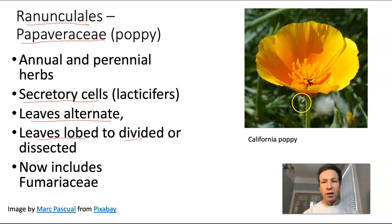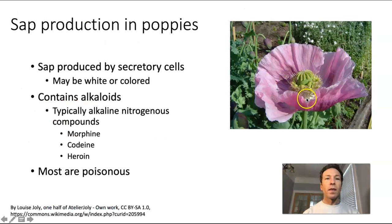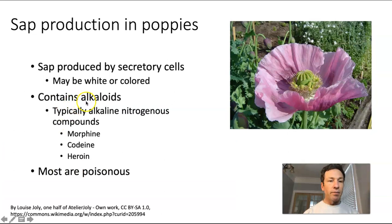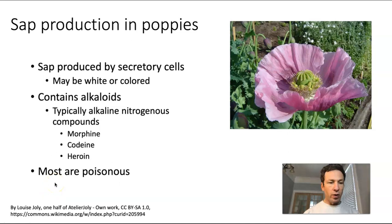Here's an example of a poppy — the California poppy, which is common on the west coast. Poppies tend to produce sap from secretory cells; the sap may be white, clear, or colored. The sap typically contains alkaloids — nitrogenous compounds that tend to be alkaline or basic in pH. Some familiar ones include morphine, codeine, heroin, and nicotine. Because of these alkaloids, most poppies are poisonous, though California poppy may be an exception.